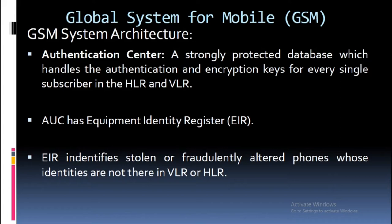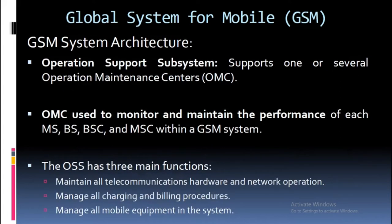The Authentication Center (AUC) is a strongly protected database which handles the authentication and encryption keys for every single subscriber in the HLR and VLR. The AUC also has an Equipment Identity Register (EIR), which identifies stolen or fraudulently altered phones whose identities are not present in the VLR or HLR.